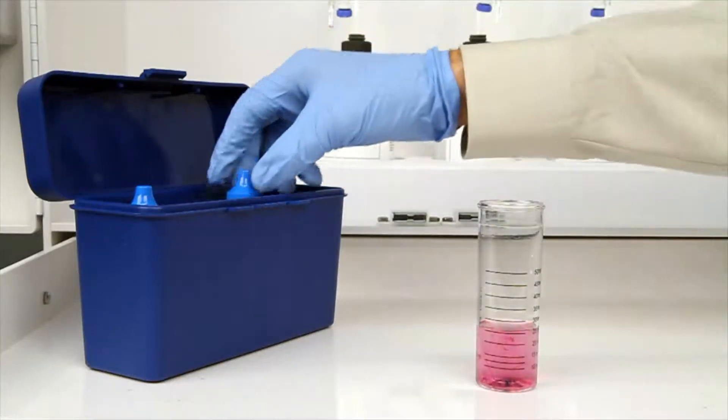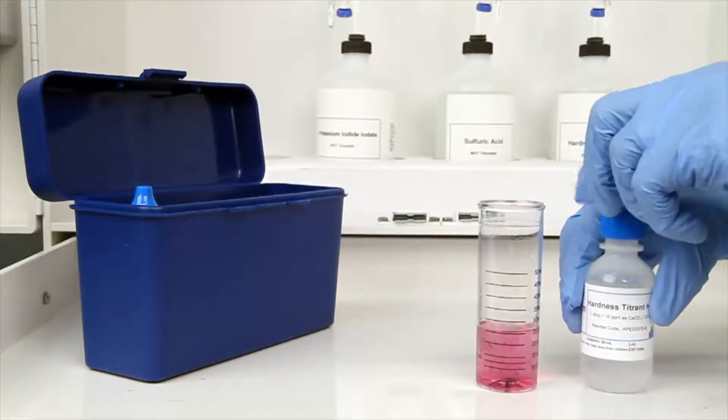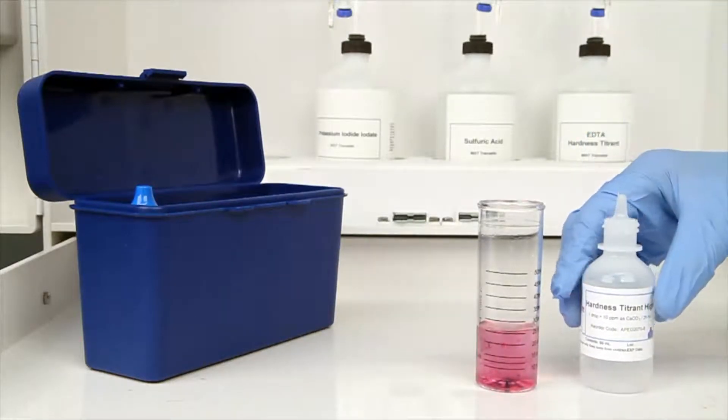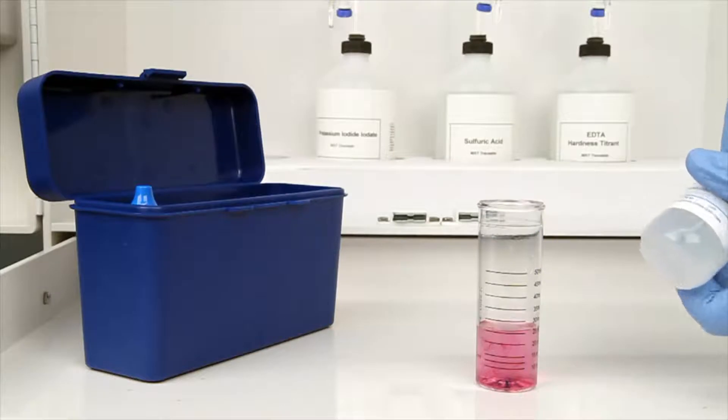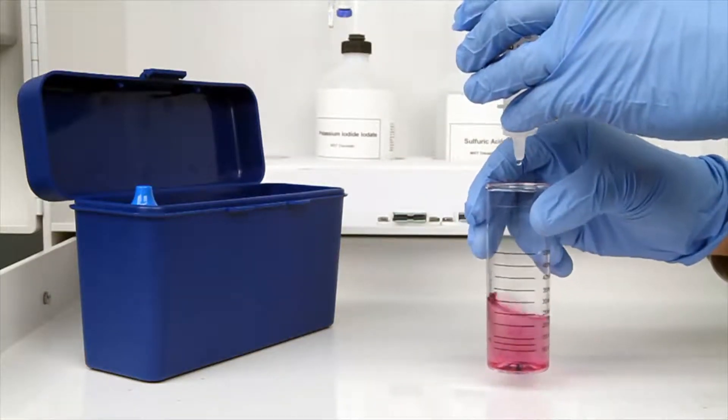The next step according to the Endpoint ID procedure is to perform the titration. Each bottle of titrant is labeled with the equivalency and sample size it was manufactured for. It's important to make sure you have the proper titrant and the proper sample size for this titration.